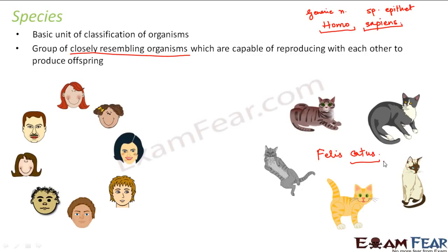Examples of species include human beings, cats, dogs, mango, and rose — each of them belong to a different species.